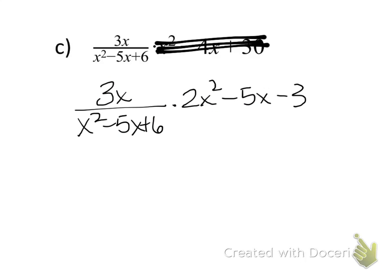This next example I'd like you to try. First, change the problem: the first fraction stays as 3x / (x² - 5x + 6), but multiply it by (2x² - 5x - 3). Note that the second expression is over 1, so you still need to multiply numerator and denominator. Write the full numerator together. Be careful — there's a coefficient of 2, so this one takes a bit more work to factor.